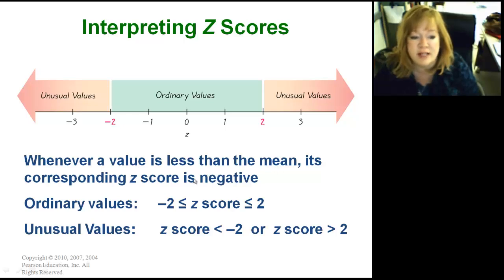So whenever a value is less than the mean, it's going to be negative. So ordinary values fall between negative two and two with your z-score. Unusual values are a lot further from the mean, over two standard deviations, or over two on your z-score.